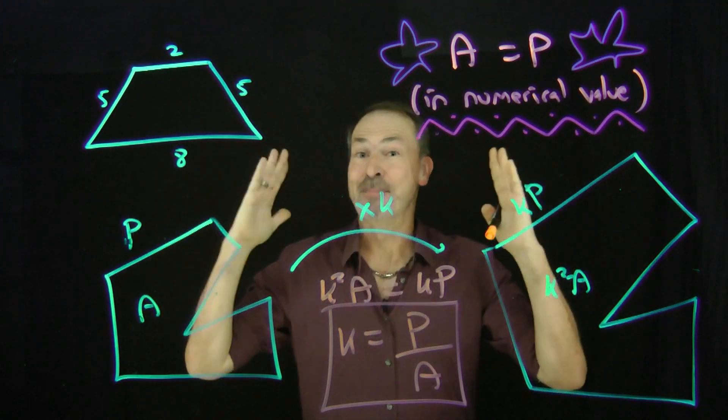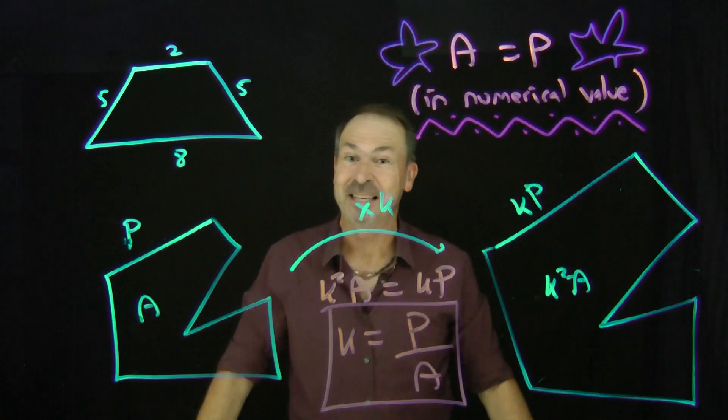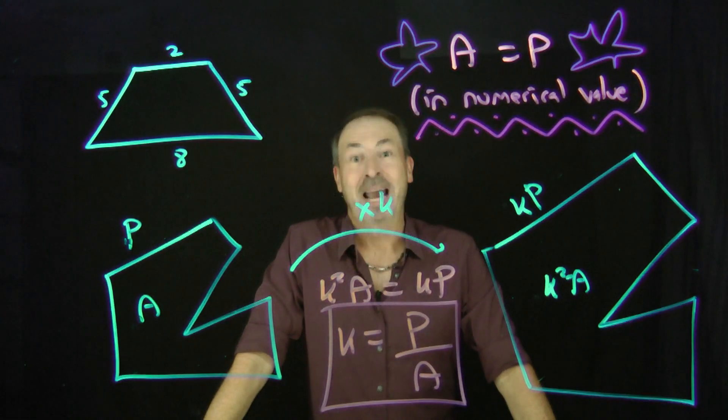You can always make this happen. But of course the snag is, you can make it happen, but you might not have integer side lengths. That's the snag. Keep the side lengths integers. Suddenly makes this a real challenge.